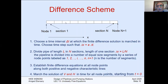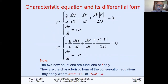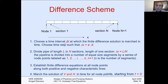The pipe sections are numbered: section one, two, three, four, five, and the last one we call section N. Each section has a node upstream and a node downstream. So this is node number one, node number two, three, four, five, and this will be node number N, and this is node number N plus one. At the end, every pipe will have N sections and N plus one nodes.